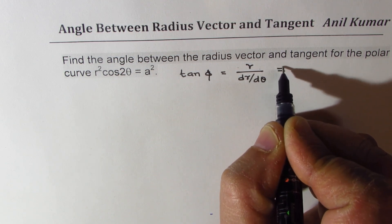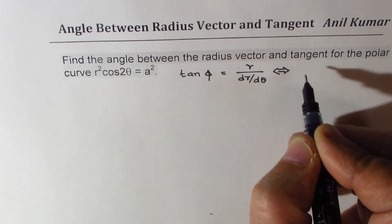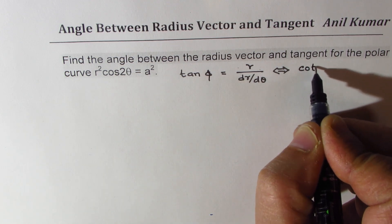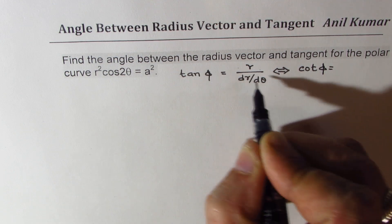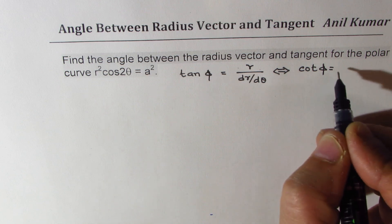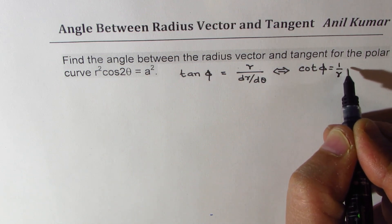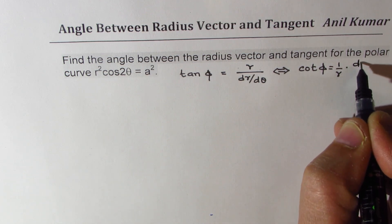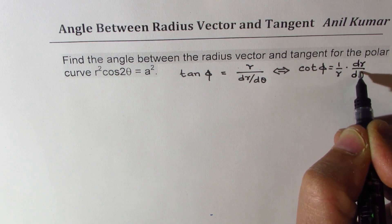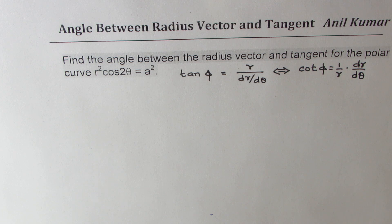Now this could also be written in cotangent form: cot φ is 1 over tan φ, which equals the reciprocal, giving us 1/r times dr/dθ. So that is the formula which has to be used.